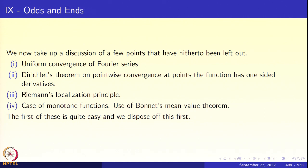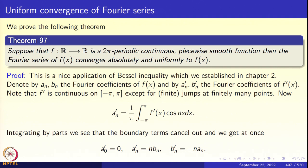The first item — uniform convergence of Fourier series — is very easy. The theorem states: suppose f from ℝ to ℝ is a 2π-periodic continuous function that is piecewise smooth. Piecewise smooth means there is a partition of the interval [−π, π] into finitely many non-overlapping intervals, on each piece the function is differentiable, and at the junction points the function has one-sided derivatives — both finite. Then the Fourier series of f(x) converges absolutely and uniformly to f(x).